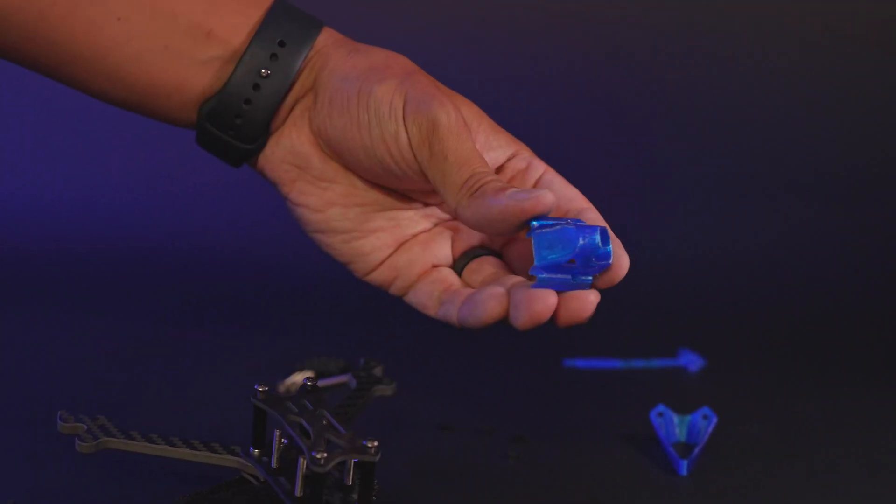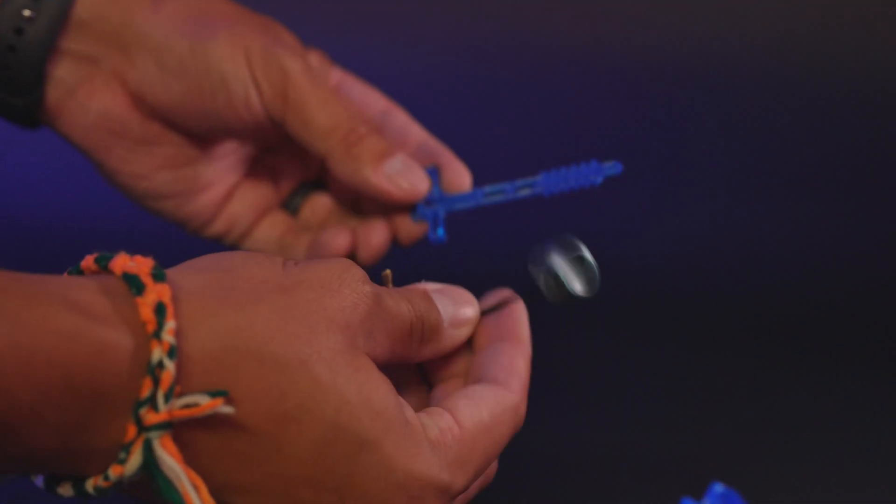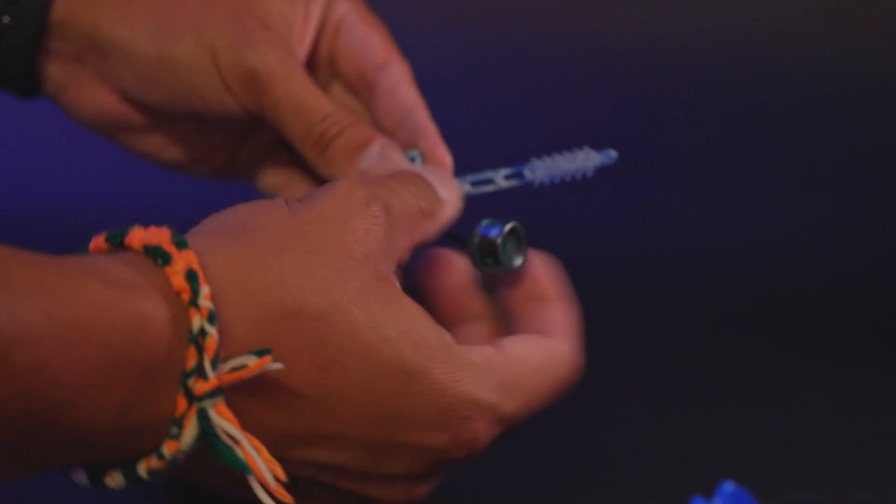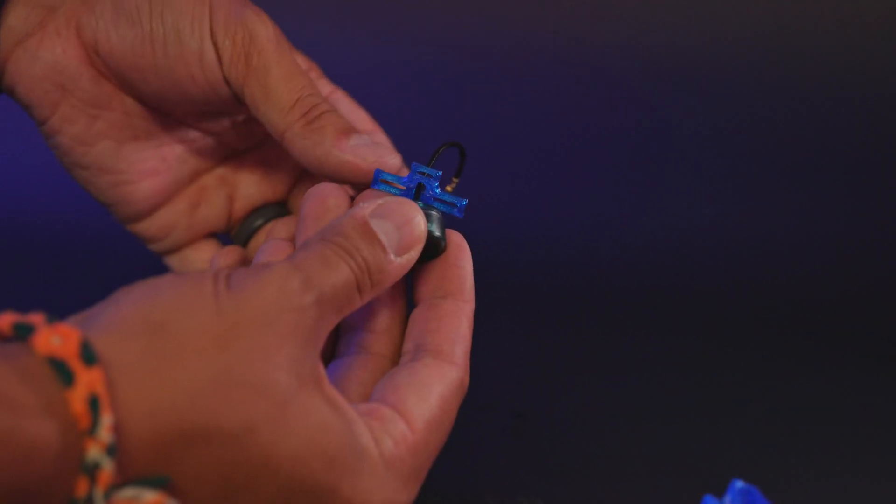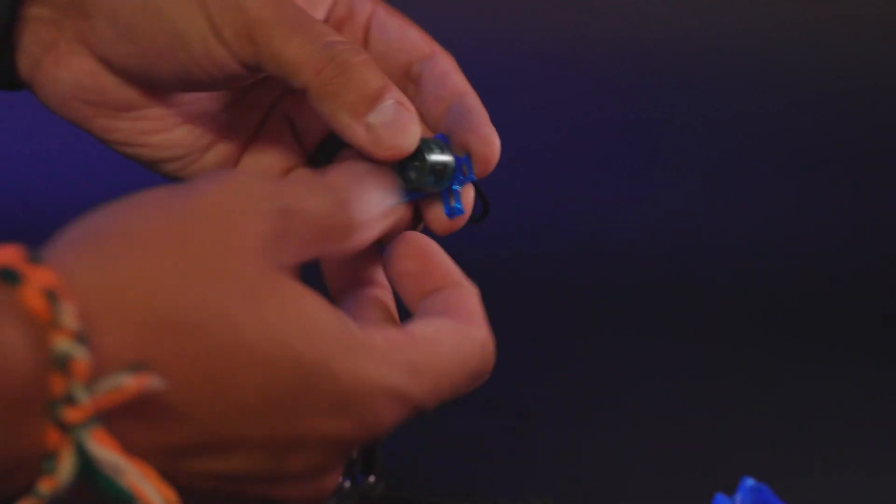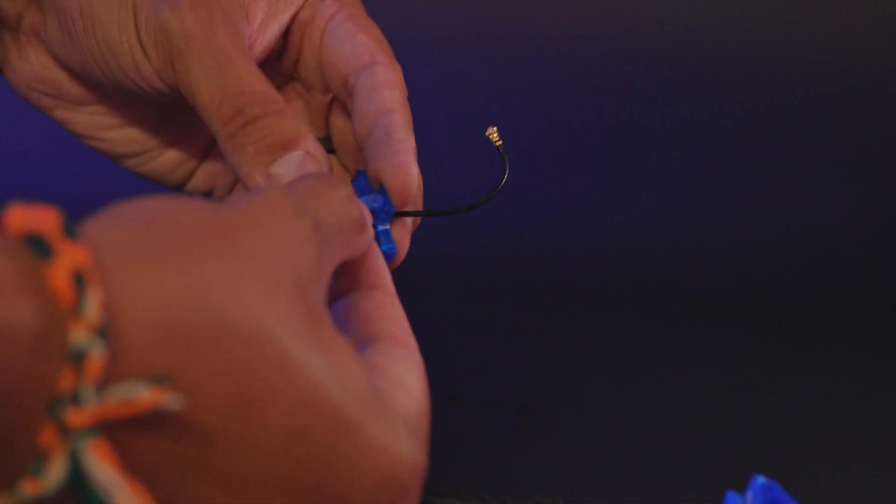And now if you order TPU parts, you're going to get a camera mount, a turtle fin, and a universal antenna mount. This universal antenna mount kind of works like a zip tie. First you'll grab your UFL and you'll put it through the hole, and then you're going to take the strap and put it over the antenna and through the middle slot.